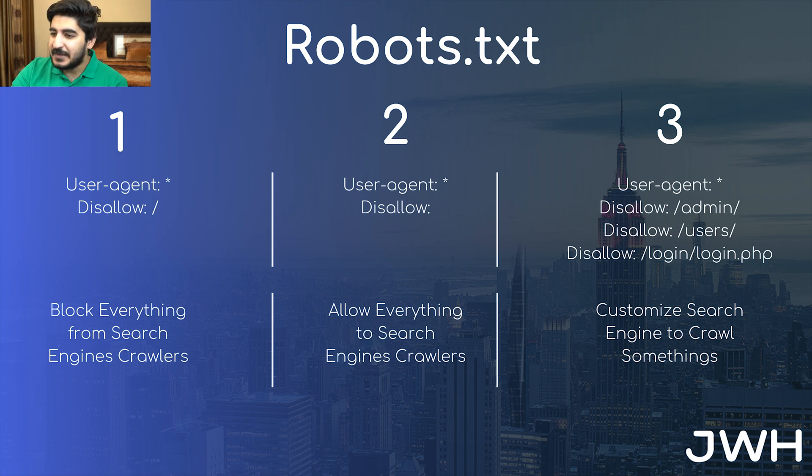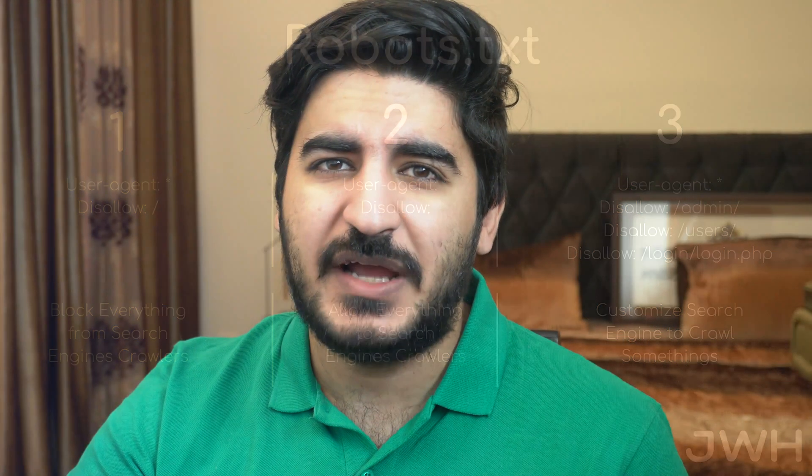In the second case, 'User-agent: *' means all user agents. You can specifically call Googlebot, Bingbot — every search engine has its own robot, and even tools like Screaming Frog, DeepCrawl, and Moz have robots. You can block them as per your requirement. You can enable advanced rules, but we will talk about the rules you use when starting out.